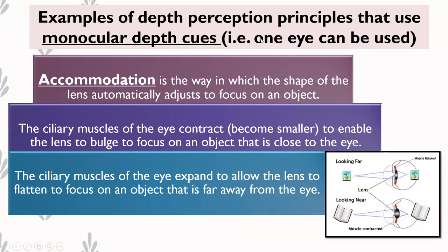Accommodation is how your lens automatically adjusts to focus on an object, and it's influenced by the ciliary muscles. The ciliary muscles contract if the image is very close, and relax if the image is further away. Accommodation is a monocular depth cue because you're able to focus on an object even with only one eye — you don't need both eyes to accommodate.